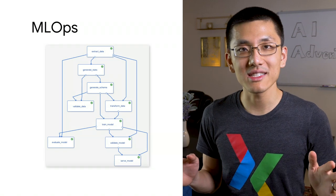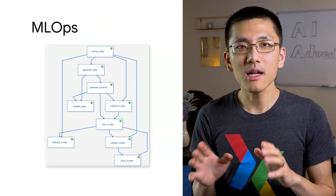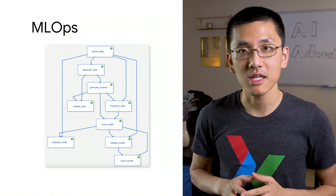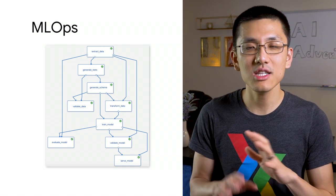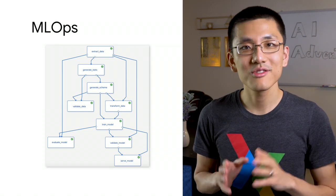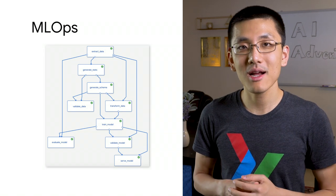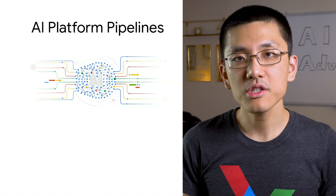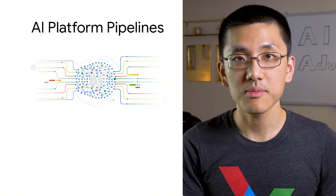MLOps is all the rage these days — a combination of machine learning and operations. It applies many DevOps best practices to the machine learning ecosystem. We often hear about how important it is to have a well-running continuous integration and deployment pipeline for software development. So as your machine learning setup matures, you should begin to incorporate these best practices as well. AI Platform Pipelines allows you to orchestrate your machine learning workflows as reproducible and reusable pipelines.